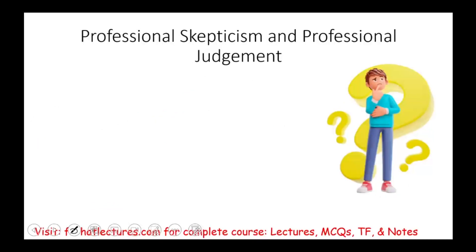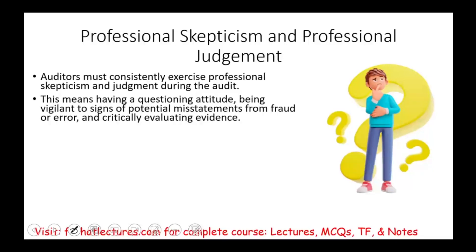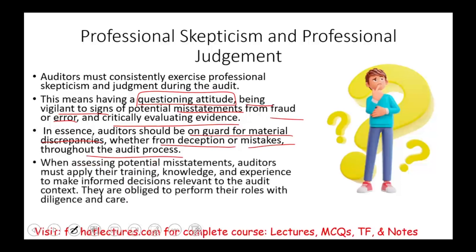The auditor should also exercise professional skepticism and professional judgment. Auditors must consistently exercise these during an audit — it means having a questioning attitude, being vigilant for signs of potential misstatement from fraud or errors, and critically evaluating the evidence. Everything you look at, ask: does this make sense given the industry and the company's environment? An auditor should be on guard for material discrepancies, whether from deception or mistakes throughout the audit. When assessing potential misstatement, the auditor must apply their training, knowledge, and experience to make informed decisions and perform their role with due diligence and care.